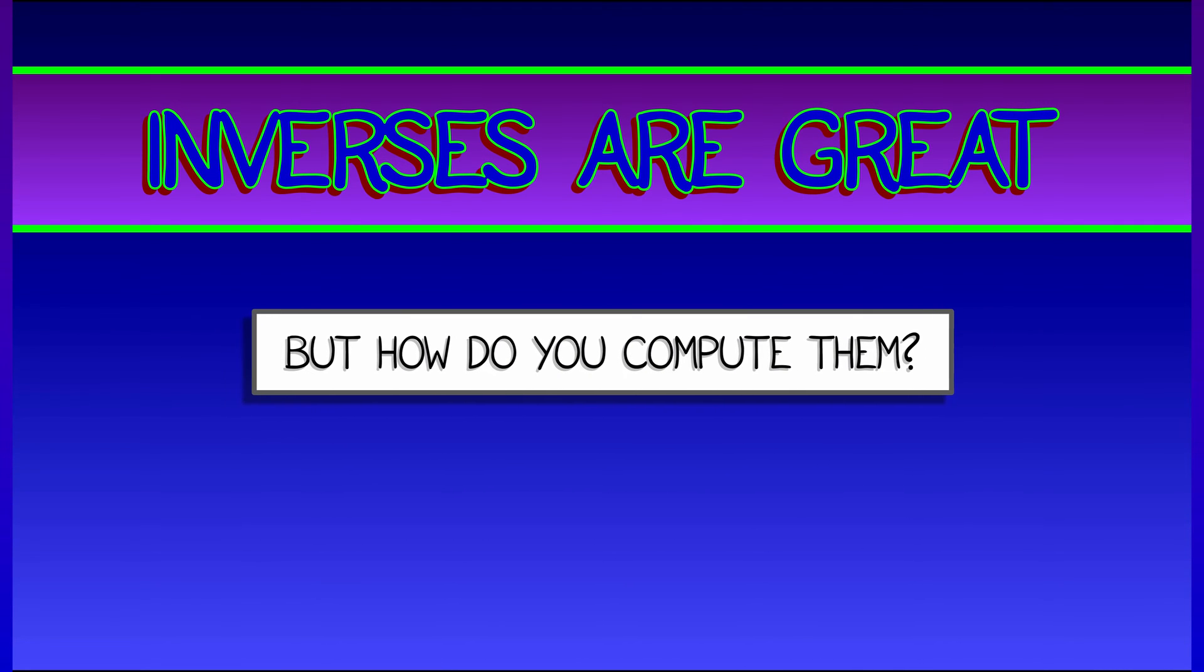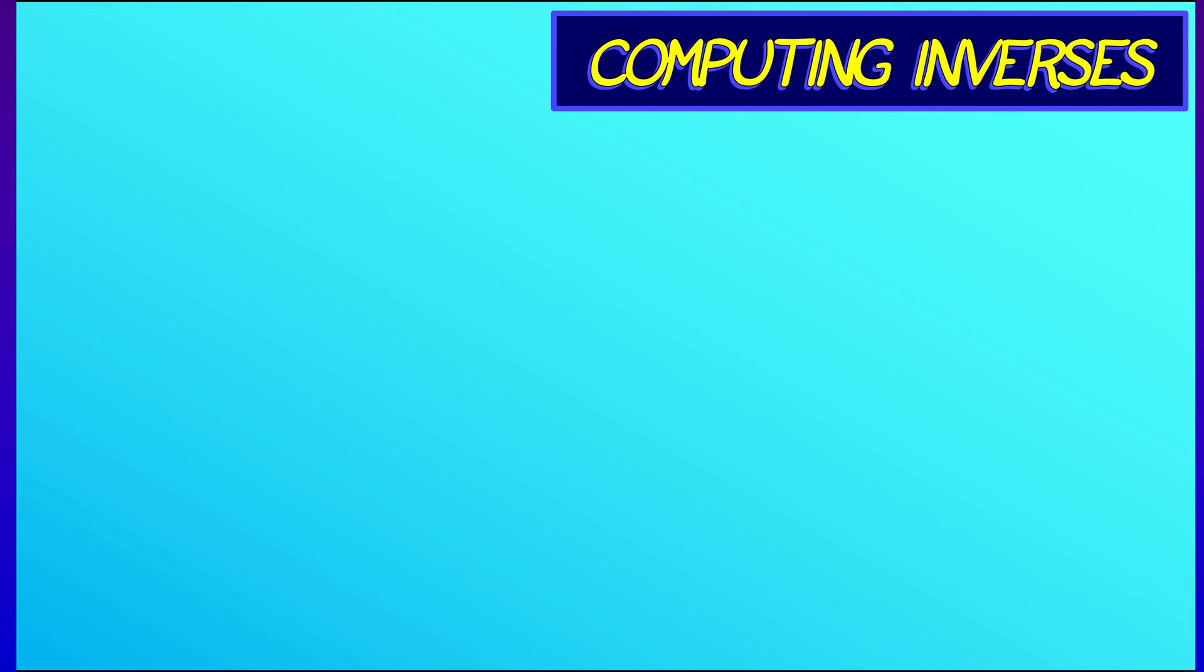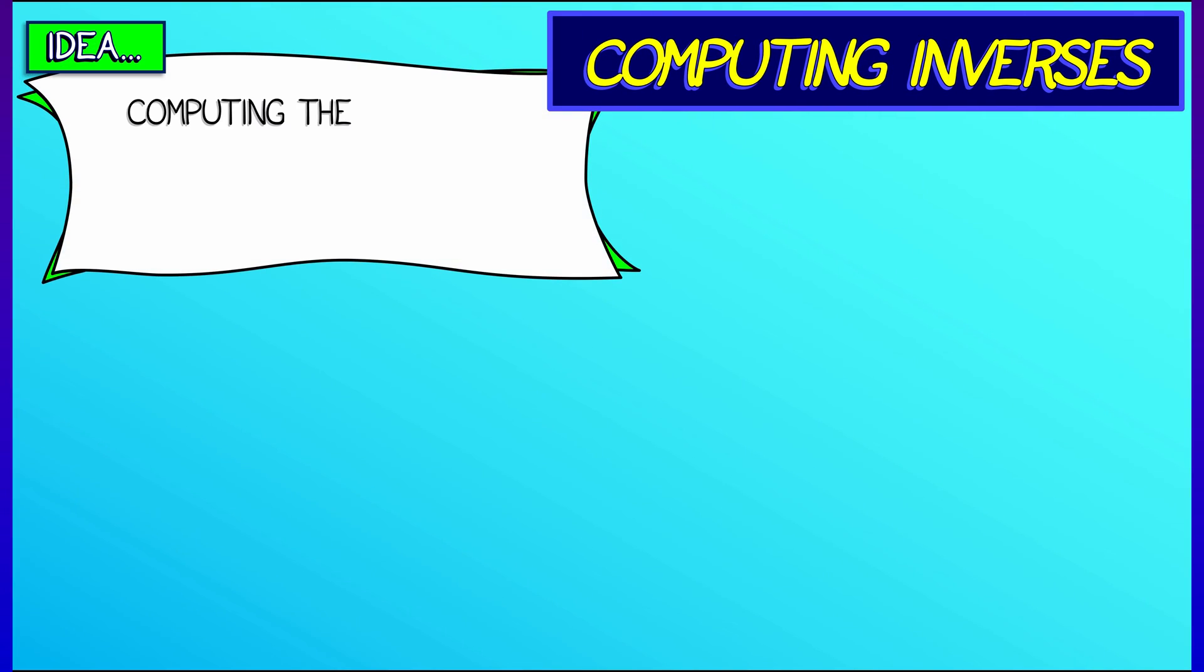All right, then. So matrix inverses are great. They're wonderful, they're useful. But how do you compute them? Well, it's not easy, but it's also not impossible. Let's think about how to compute matrix inverses, reducing it down to something we do know how to do, namely solving Ax equals b.